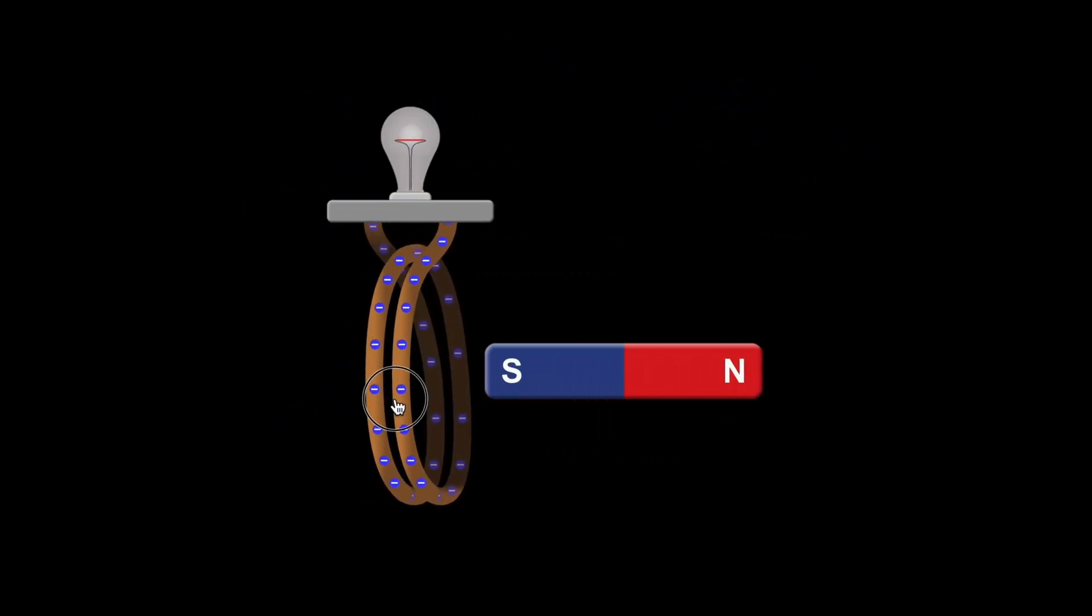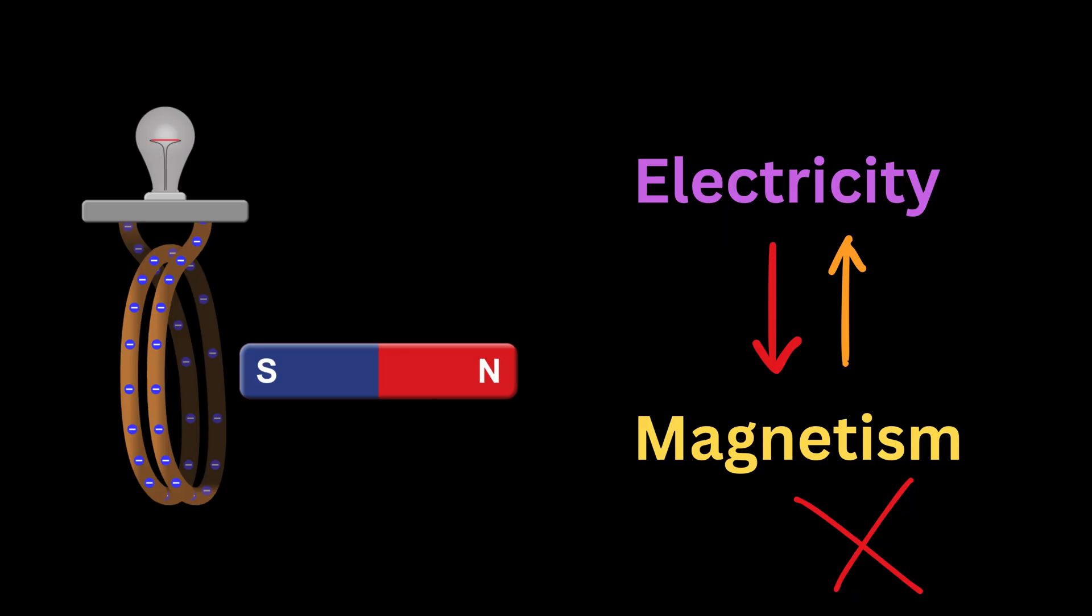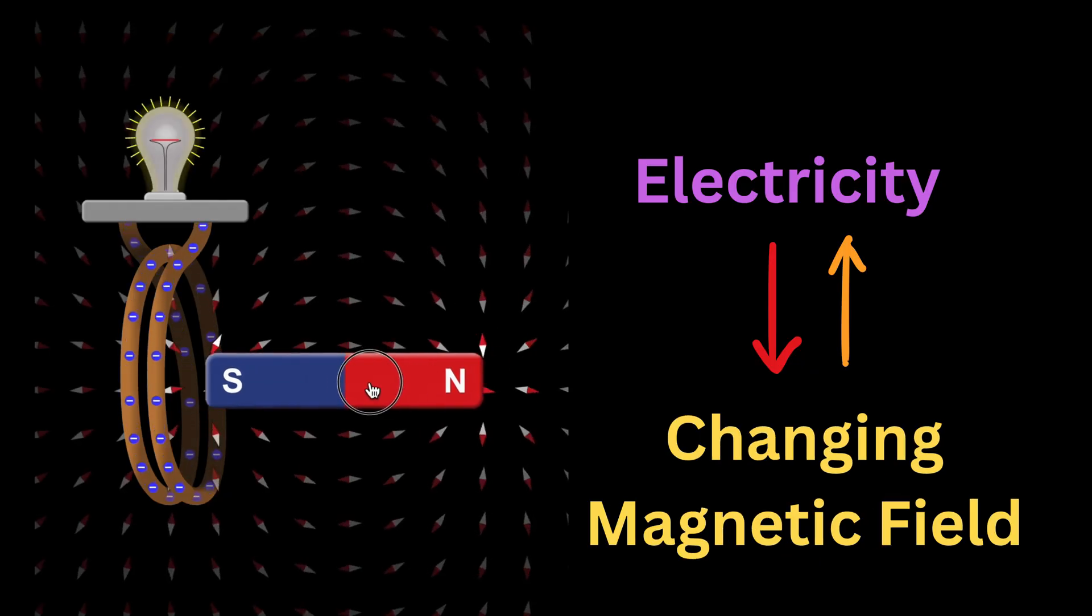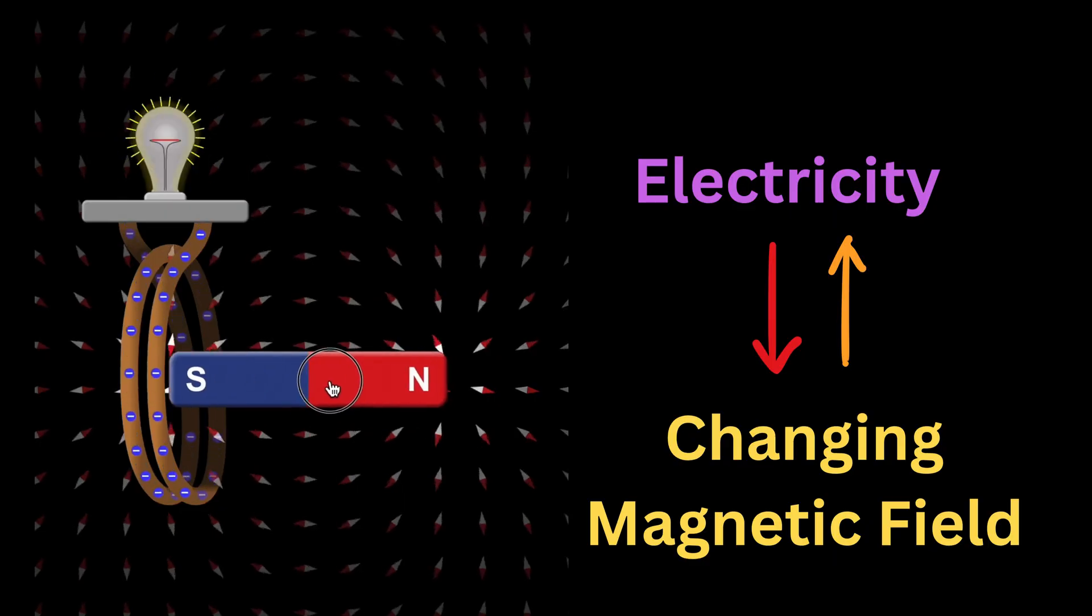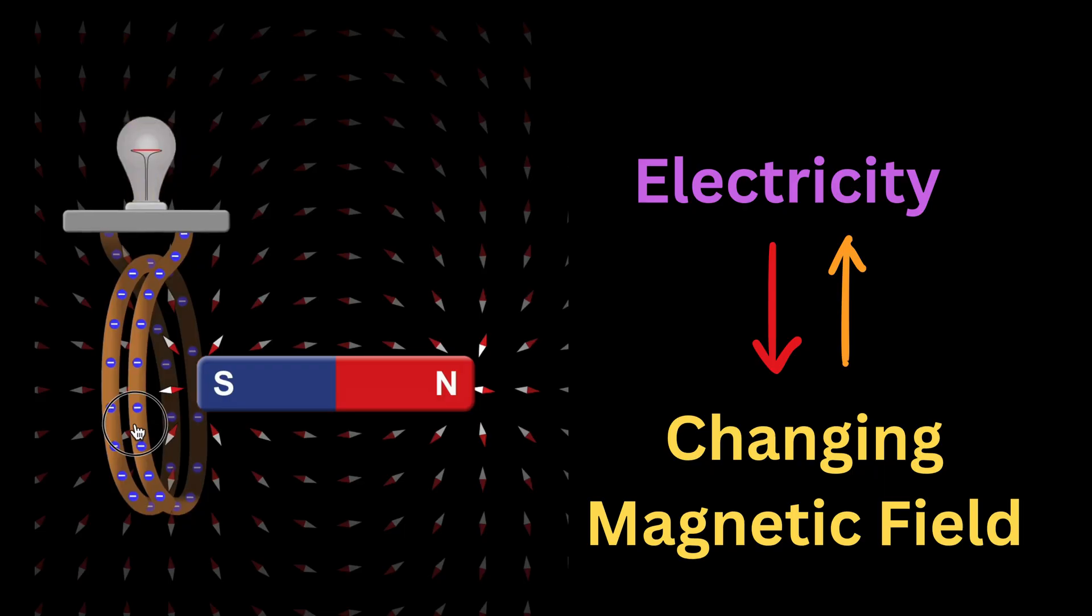From these careful experiments, Faraday realized something powerful. It wasn't the magnet itself that produced electricity. It was the movement either of the magnet or of the coil. More precisely, it was the change in the magnetic field experienced by the coil that made electricity flow.